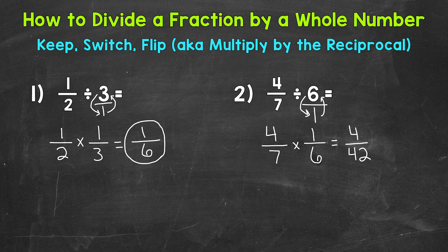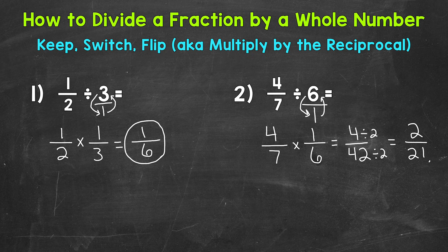Four and 42 have a greatest common factor of two. So let's divide each of these by two. And we get 2/21 for our final simplified answer.